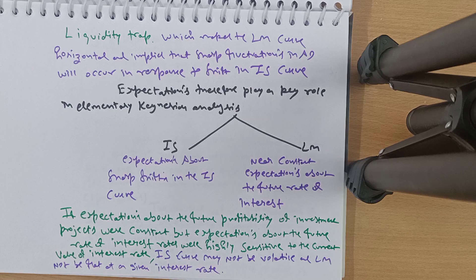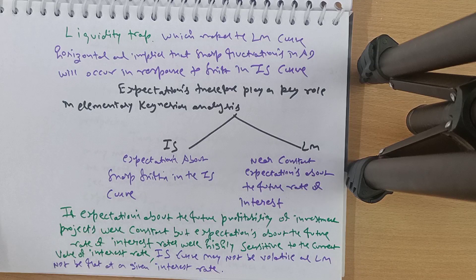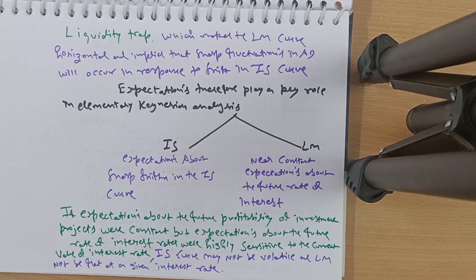Expectation therefore plays a key role in elementary Keynesian analysis. In the IS curve, the assumption is that IS will be volatile. In the LM curve, the assumption is that it will be horizontal. If expectations about future profitability of investment were constant but expectations about future interest rates were highly sensitive to current interest rates, then IS may not be volatile and LM may not be horizontal.